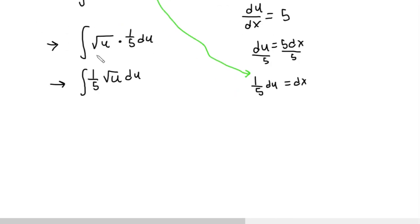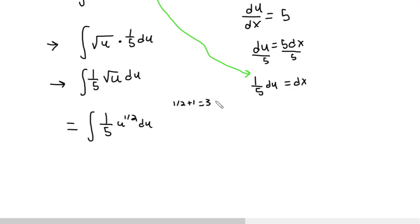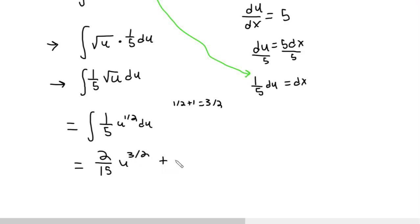Now we can evaluate this integral like we normally would. This is the same thing as 1/5 u to the 1/2. Remember, you add 1, so 1/2 plus 1 is 3/2, and you divide by that. So we would get 2/15 u to the 3/2 plus c.